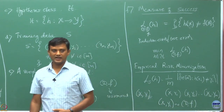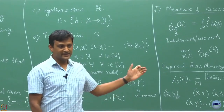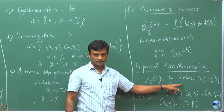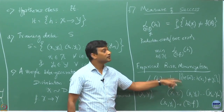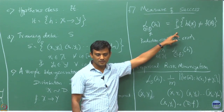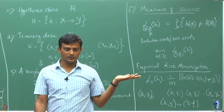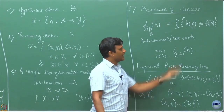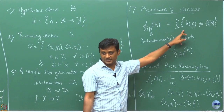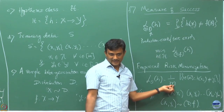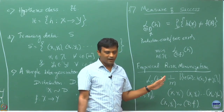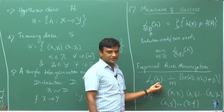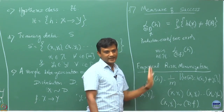Now, if I say that these points are drawn independently and they are identically distributed, as M goes to infinity what does this empirical quantity equal? By the Law of Large Numbers, if the X_i's are IID, this empirical fraction has to equal the true probability of disagreement. But M is not infinity here — M is some finite number. That is why we are going to call it empirical risk, and we will use it as a proxy for the true risk. We minimize this over H, and that is why we call this method Empirical Risk Minimization.